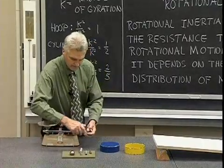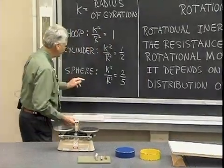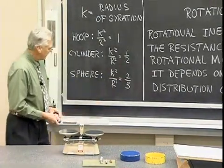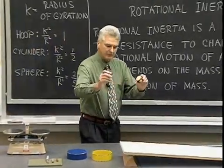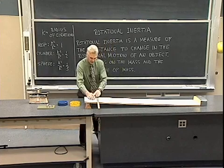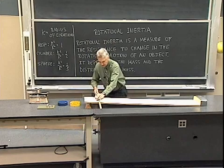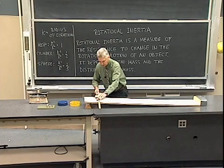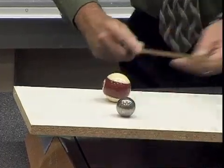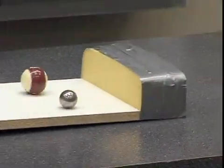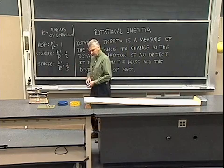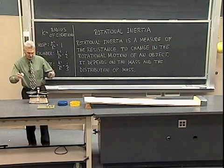Now, if we take spheres — here are two spheres. For spheres, that ratio turns out to be two-fifths. Notice that's very close to one half, but not exactly one half. Here we have two spheres that have different masses, different sizes, and in fact different densities. We're going to watch them roll down the hill, and if my prediction is correct, they will roll together because that ratio will be two-fifths in the case of each sphere. And they rolled down the hill together, showing that the ratio is the same — two-fifths — for all spheres, even though the radii are different.